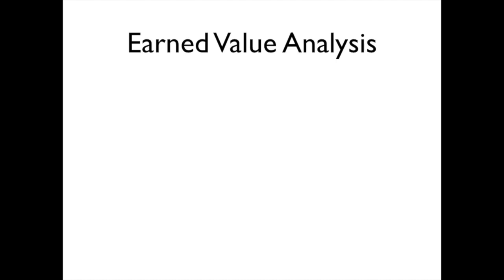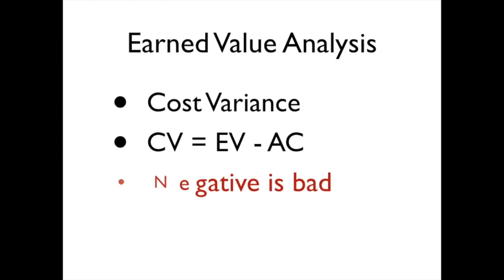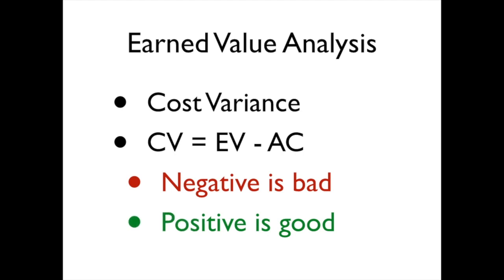Let's look at the first of two initial variances we can calculate in an earned value analysis. The first is the cost variance. Cost variance is simply the earned value of our project at this point in time minus the actual costs. A negative CV value means we are over budget — we are spending more money than we had planned. A positive CV value means we are under budget, spending less money to get the work done than planned.